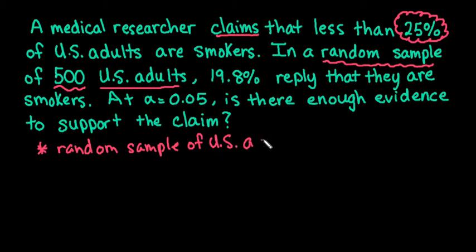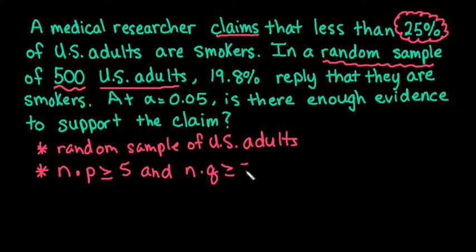Different textbooks have different conditions, so I'm going over the ones that I'm currently teaching to my students. There are other alternatives, so make sure that you look at your textbook. The other one that's extremely important is n times p has to be greater than or equal to 5, and n times q has to be greater than or equal to 5.